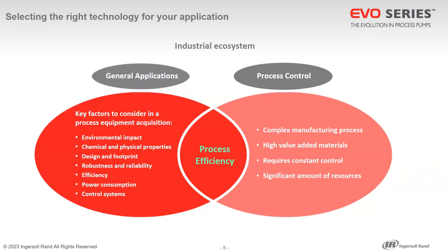These are two important additional elements to consider when selecting parameters for equipment acquisition. It's important to emphasize that when we talk about pumps, they also have their categories. There are pumps designed for general applications that don't require high levels of control, and there are pumps designed to be elements of the manufacturing process itself, following the same restricted high parameters associated with it.